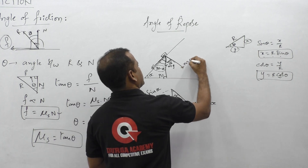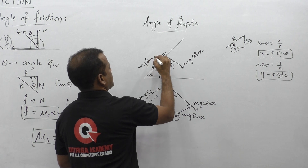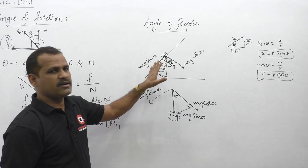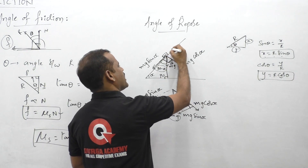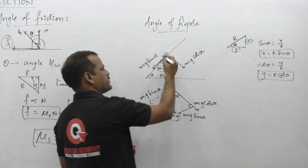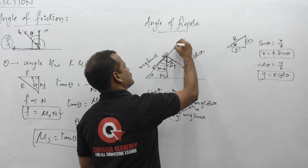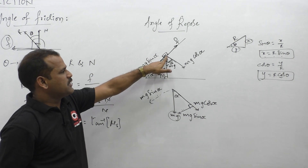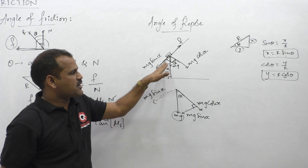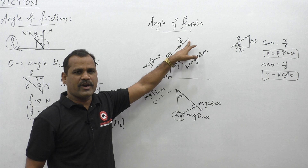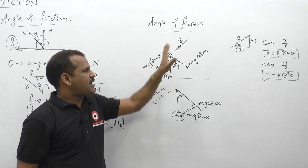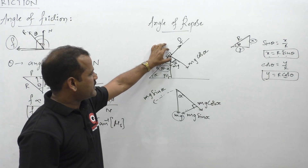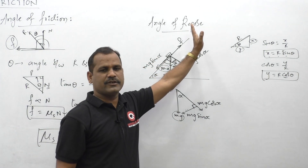So Mg cos alpha is the perpendicular component and Mg sin alpha is the component along the plane. If two surfaces are in contact there is a frictional force and normal force. The frictional force is tangential, that is along this plane. Since the object tends to move downwards due to Mg sin alpha, friction acts in the opposite direction, upward along the plane, and the normal reaction N acts perpendicular to the plane.